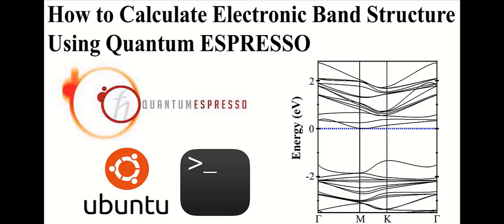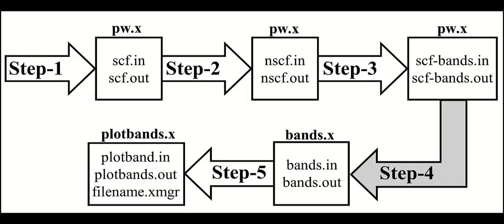Hi everyone. In this video we will learn how to calculate the electronic band structure of any material using Quantum Espresso computational code and Ubuntu Terminal. Basically there are five steps involved for the calculation of the band structure using Quantum Espresso. In the first three steps we will perform the SCF, NSCF, and bands calculations using pw.x program. In the fourth step we will perform the bands calculation with bands.x post-processing program. In the fifth or last step we will run a file using plotband.x program. The plotband.x program will generate a file with xmgr extension which will be used to plot the band structure.